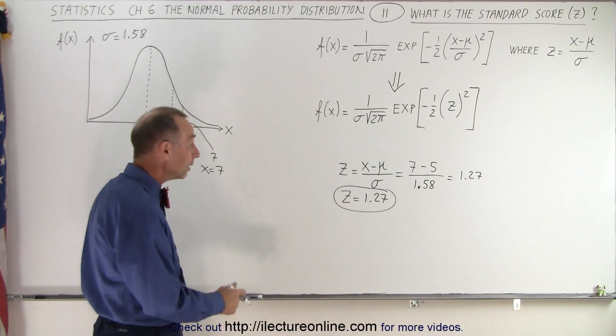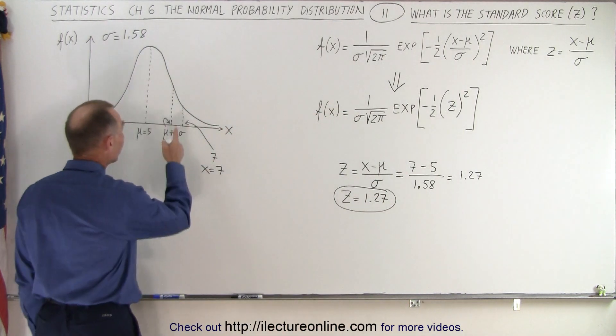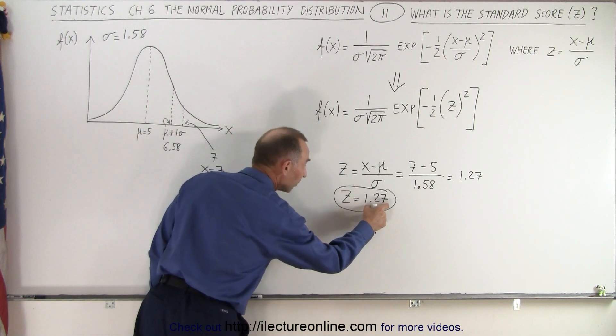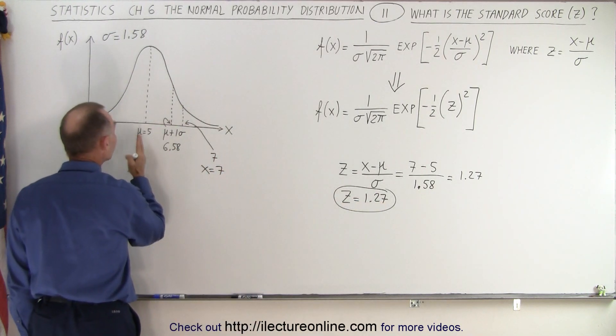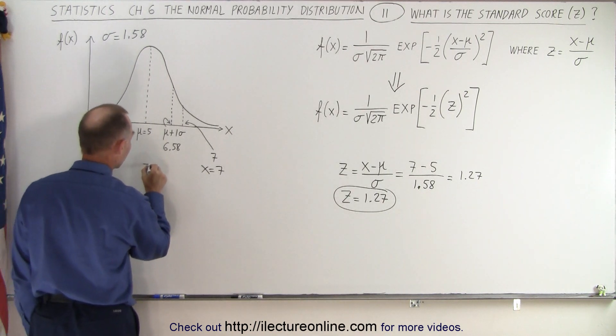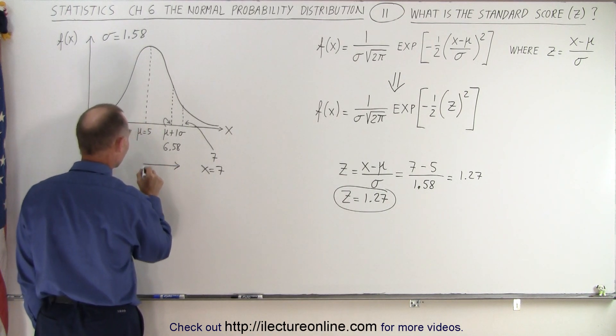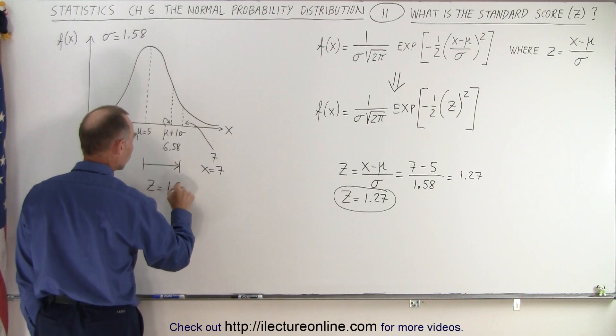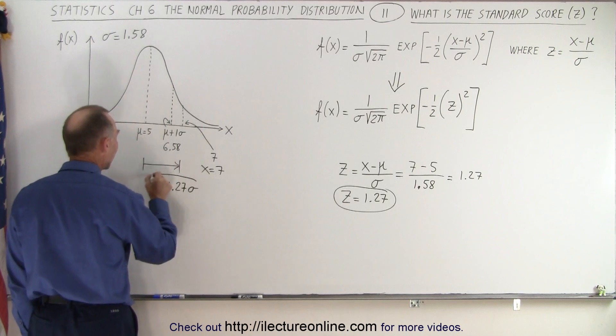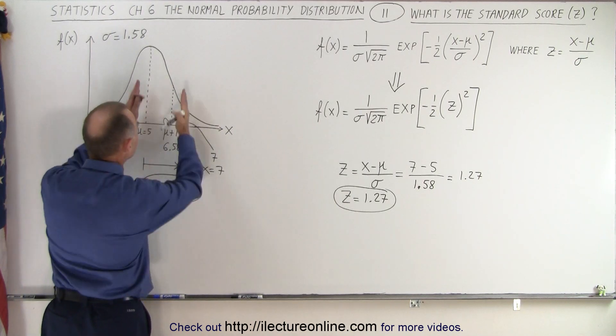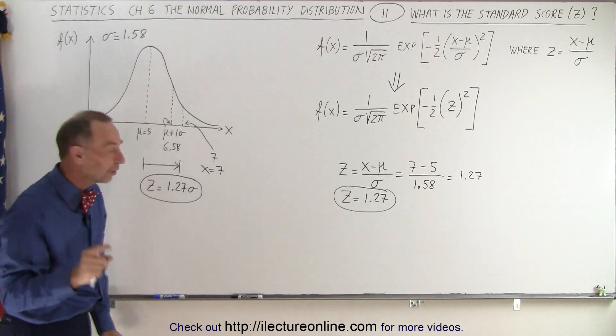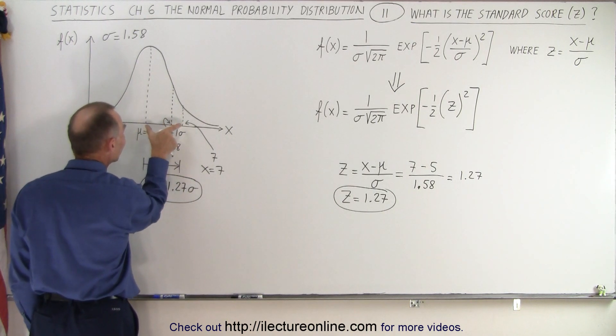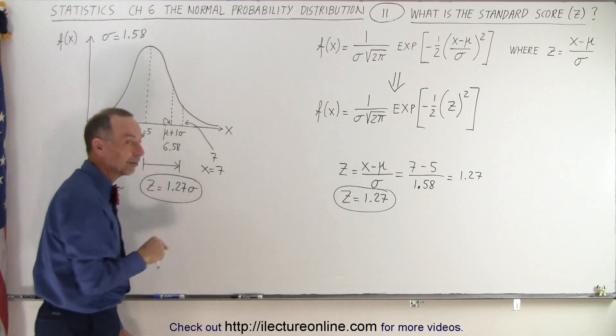So what does that mean? That means that the value we picked, 7, is 1.27 sigmas to the right of the mean. So the distance from there to there, in terms of sigmas, this distance, which is Z, which is 1.27 sigmas away. And that will then enable us to calculate the area underneath the curve once we know how far the point that we picked away from the mean is, that far away in terms of how many sigmas that is.